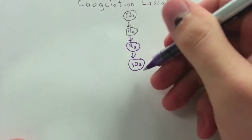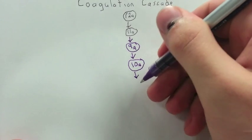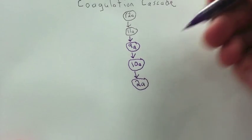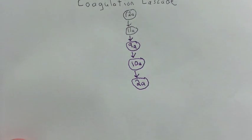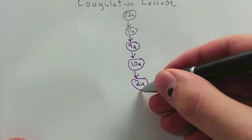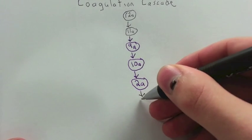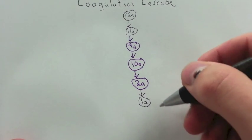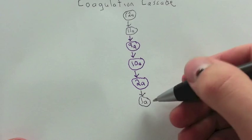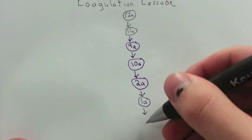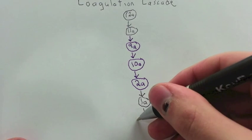And then 10a acts on 2 to form 2a, and this is the prothrombin to thrombin step. You'll want to know both the names for them and the numbers. And then 2a acts on 1 to form 1a, and this is the fibrinogen to fibrin step. And then this 1a is fibrin, and fibrin becomes cross-linked to form a more stabilized clot.